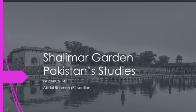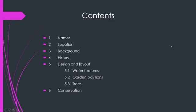Today's topic is about Shalimar Garden. First we will talk about: number one, names; number two, location; number three, background; number four, history; number five, design and layout. In the design and layout we will talk about water features, gardens, avenues, trees, and at last we will talk about conservation.